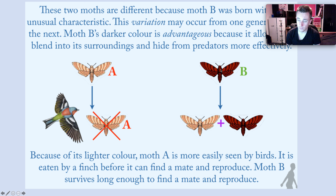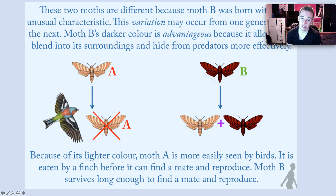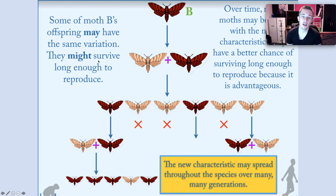Moth B, however, lives because it has an advantageous trait — its darker colour. And therefore it is able to live and then it's able to have children and it carries on its bloodline. It carries on through the generations. Because of the light colour, moth A is easily seen by birds. And moth B survives long enough to find a mate and reproduce, have children.